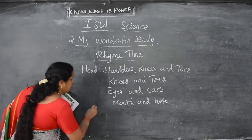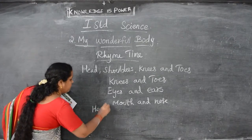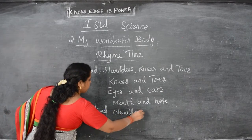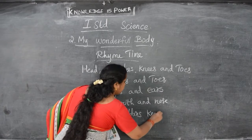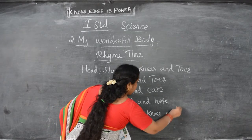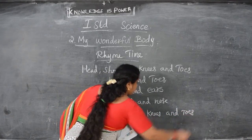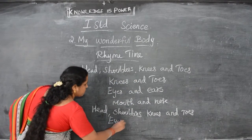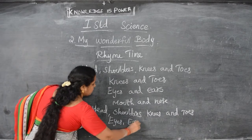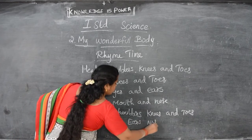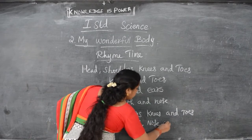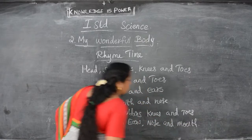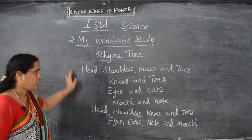Next — head, shoulders, knees and toes. Eyes, ears, mouth and nose. Eyes, ears, nose and mouth.